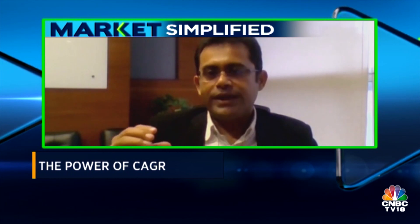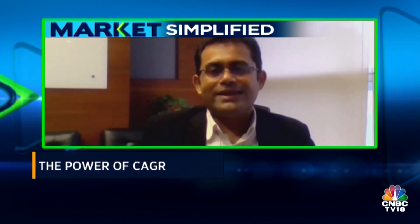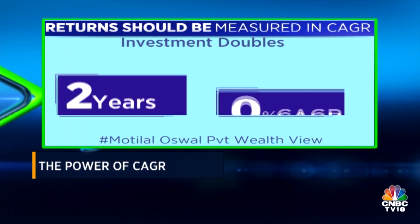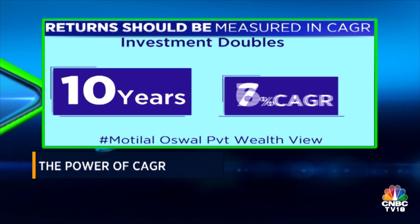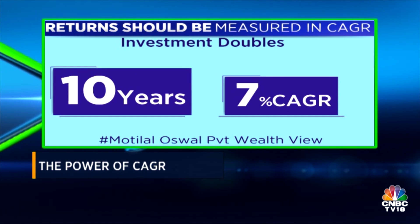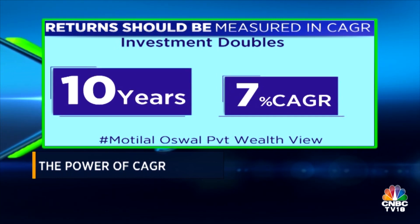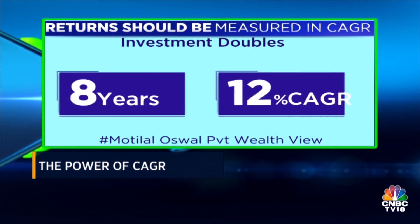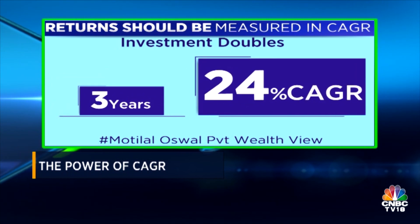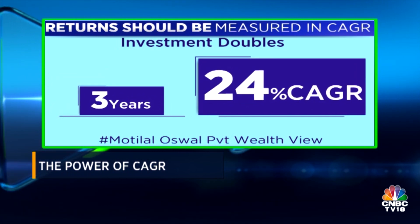All returns should be measured in terms of Compounded Annual Growth Rate, otherwise it is incomplete. If somebody doubles his money in 10 years, you've got only 7% CAGR. But if someone doubles that same money in three years, you've got 24% CAGR, and it makes a world of difference how your money multiplies into the future.